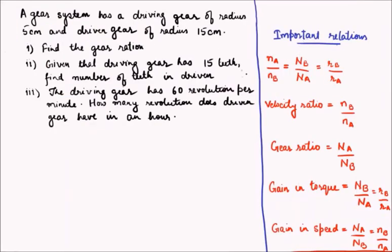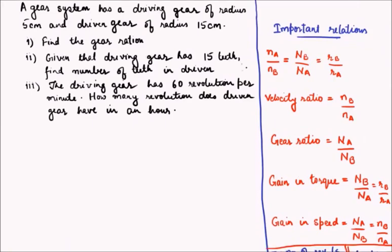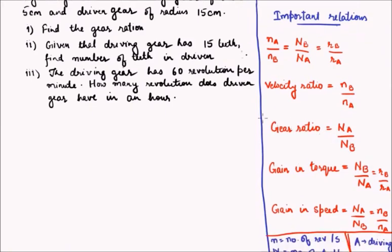These are some of the important relations which we discussed in our last lecture. The most important relation which we found was the relation between the number of rotations, the number of teeth, and the radius of the gears for the driving and the driven wheel. We saw that more the radius, more the number of teeth, and less will be the revolution speed.